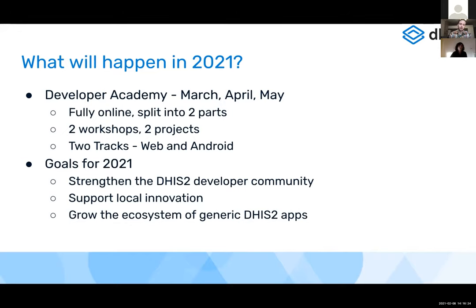We have a number of high-level goals for 2021 and beyond for these initiatives. I highlighted three of them here, but mainly they are to strengthen the developer community. The idea is that we want to have shorter communication gaps between the core team that's developing tools and developing DHIS2 core, and people that are really stretching the limits of that platform and wanting to extend it and tailor it for their specific use cases — building that community, allowing people to share resources amongst themselves, share success stories and challenges encountered as people are developing applications throughout the ecosystem.